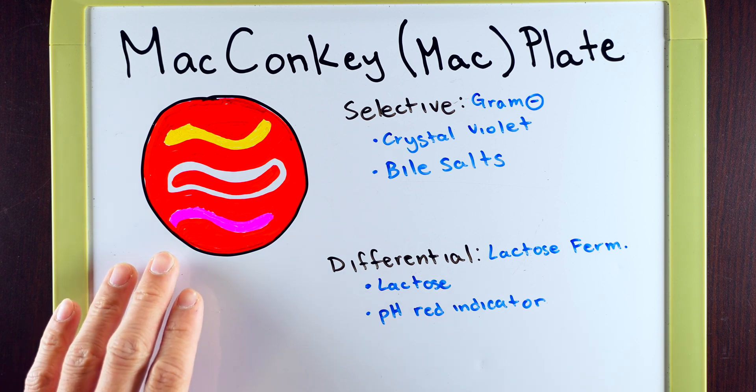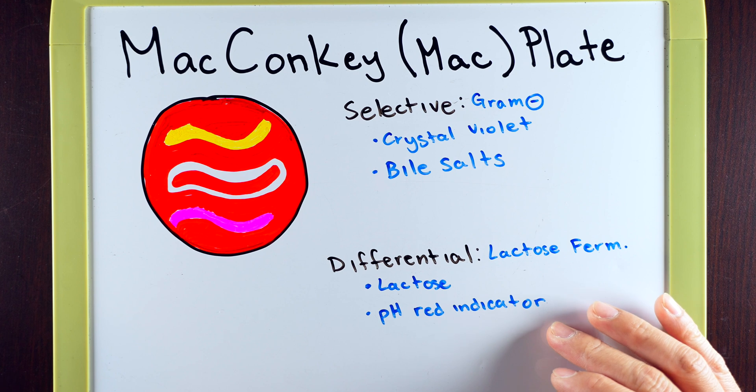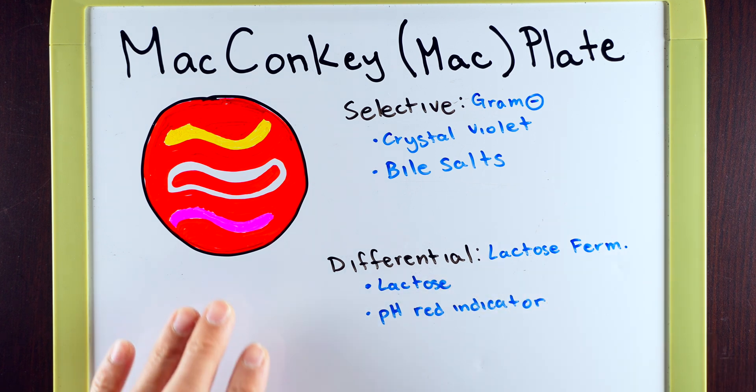Now, the one on the bottom reflects if we have gram-negative bacterial growth because it's growth on a MAC plate, but it also has a pink color. So does this mean that it's a lactose fermenter because it took up the pH red indicator, which means that it took up the lactose. And I'm sorry to tell you, but the one on the bottom here is not a lactose fermenter.